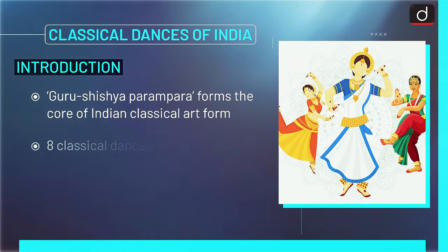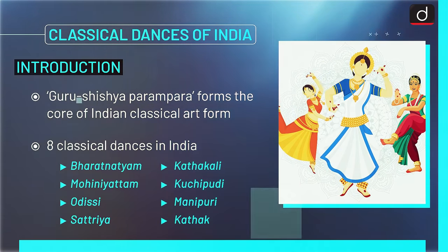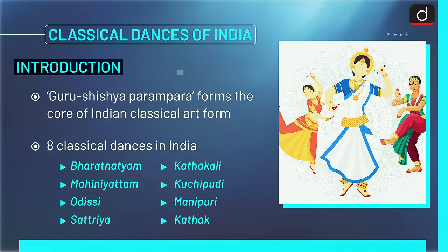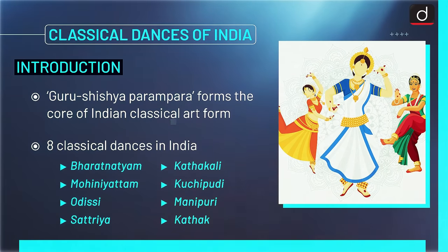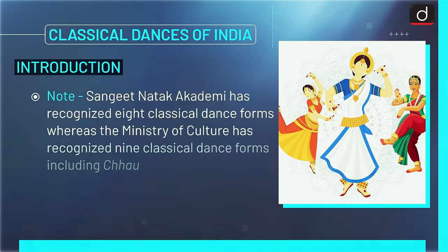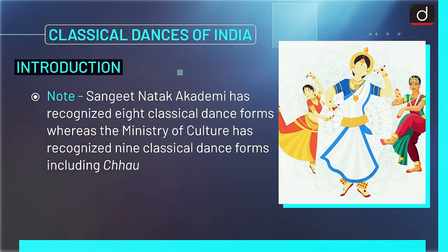Guru Shishya Parampara forms the core of Indian Classical Art form. There are eight classical dances in India: Bharatnatyam, Kathakali, Mohini Yattam, Kuchipudi, Odissi, Manipuri, Satriya and Kathak. It is to be noted that the Sangeet Natak Akademi has recognized eight classical dance forms, whereas the Ministry of Culture has recognized nine classical dance forms, including Chhau.